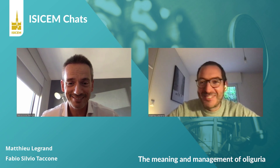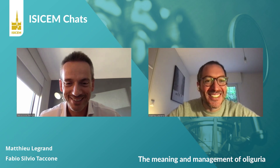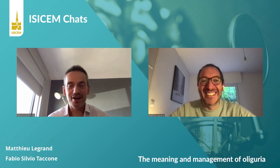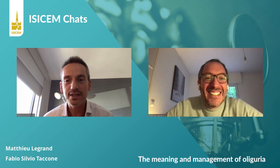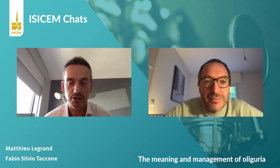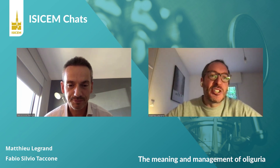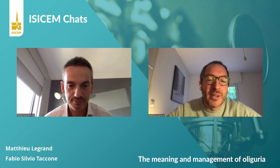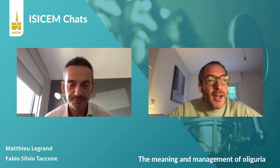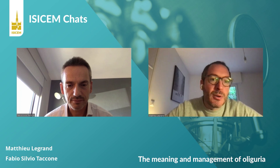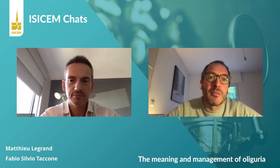How are you, Matthieu? Everything good, thanks Fabio, thanks for the invitation. Do you like the topic? Very much. So the first question I have for you is: what does oliguria mean to you, and how do you define oliguria in clinical patients? Oliguria is one of the key physiological parameters we measure and care a lot about in ICU patients — like minute pressure or consciousness, it's really one of the key factors we keep a very close eye on in our critically ill patients.